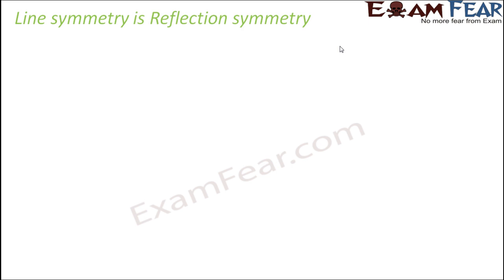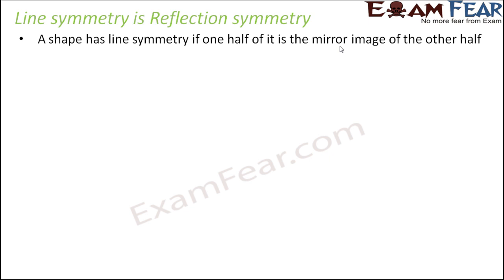When we talk about line symmetry, we see a very interesting thing: reflection happens in line symmetry. So there is a role of reflection in line symmetry. Whenever an object or figure has line symmetry, it is observed that one half of the figure is a mirror image of the other half, because one half is identical to the other half.